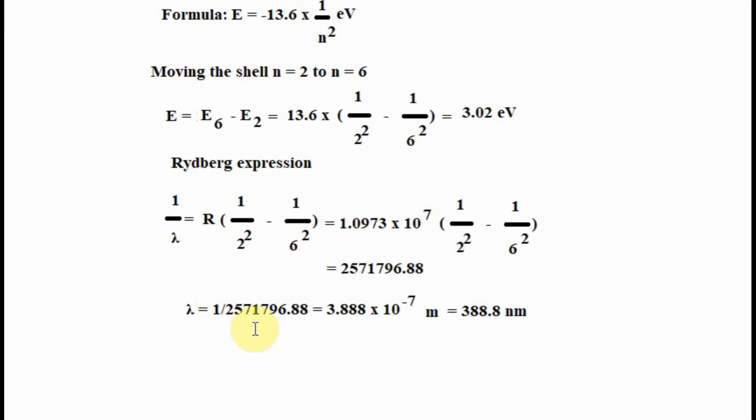Then we have 1 divided by this number. And we get the lambda, which is the wavelength.